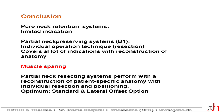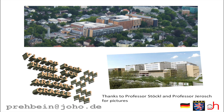Of course, if we compare the surgical techniques for short stems to traditional stems, they are definitely muscle and tendon sparing. Partial neck resecting systems are a very interesting variation of short stems, performing with a reconstruction of patient-specific anatomy with individual resection and positioning. And if we compare different types of prostheses, an optimum will be achieved if we have different CCD angles or different options for lateral and standard offset. Thank you very much.